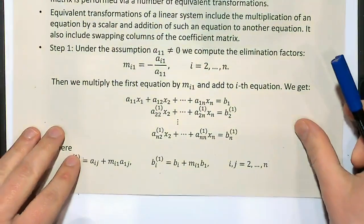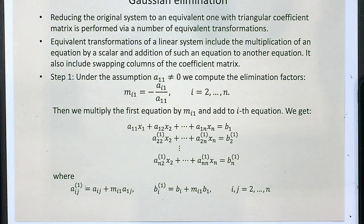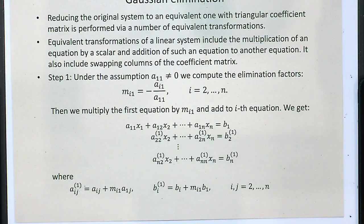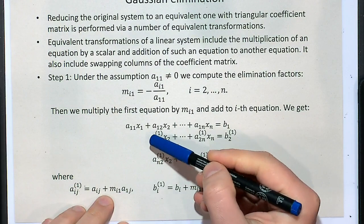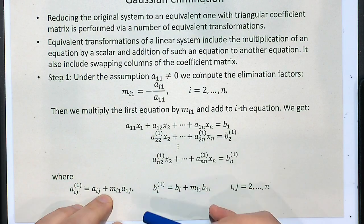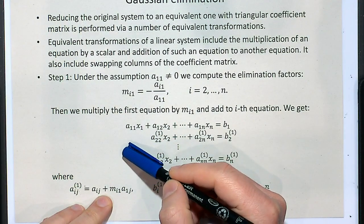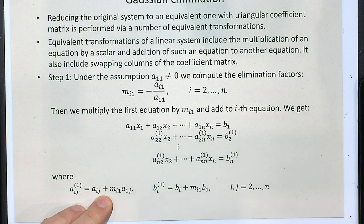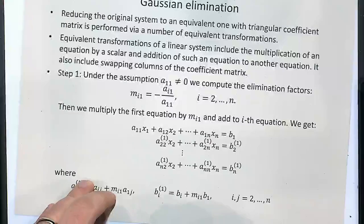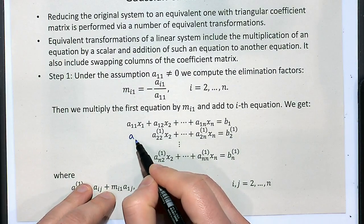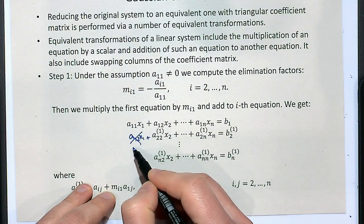We perform this through several steps. We always do not touch the first equation — we keep it as is. For rows 2 to N, if we want to eliminate the first column contribution, meaning the multiplication of x1, we want to remove it from all equations from the second to the Nth row.